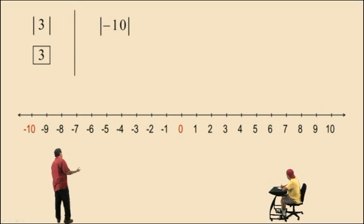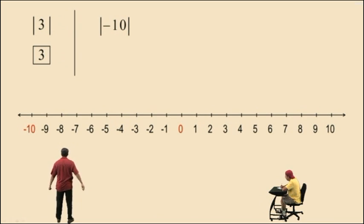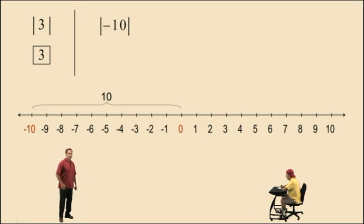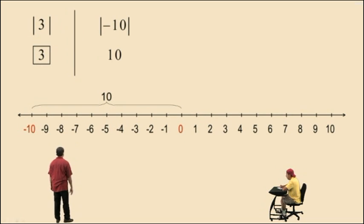How about the absolute value of negative 10? How far is negative 10 from 0 on the number line? It's 10 units that way. And so the absolute value of negative 10 is positive 10.